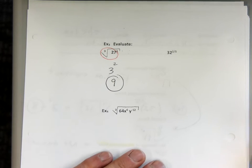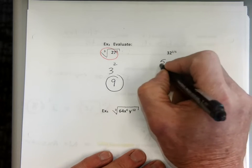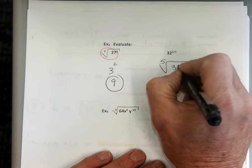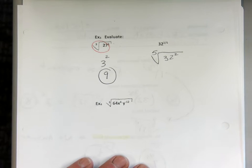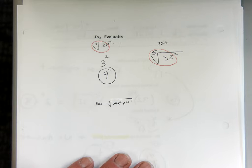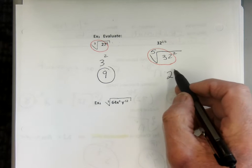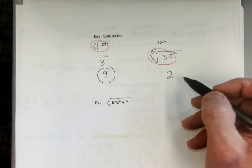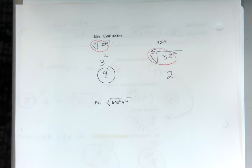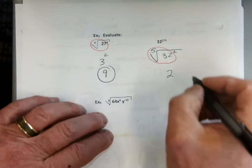32 to the 2/5 — that's the same as the 5th root of 32 squared. Is there a 5th root of 32? Yes. 2 times 2 is 4, times 2 is 8, times 2 is 16, times 2 is 32 — five 2s. So the 5th root of 32 is 2, and then 2 squared is 4.